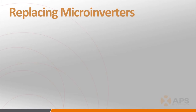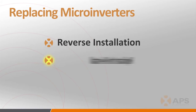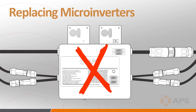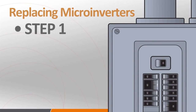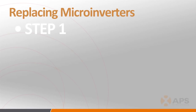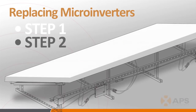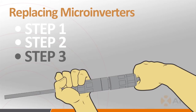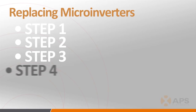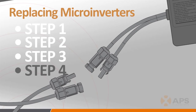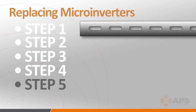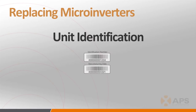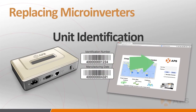Replacing the microinverters is as simple as reversing the installation process for removal and replicating it for reinstallation, with a few extra steps added for your safety. Step 1: de-energize the AC branch circuit by turning off the branch circuit breaker. With the branch circuit offline, cover the PV modules associated with the inverter to be removed with opaque covers, ensuring the panels are not producing DC power. Next, disconnect the AC connectors to the adjacent inverters. Step 4: disconnect the DC connectors from the PV modules associated with the inverter. And finally, physically remove the inverter from the rack. Follow the installation procedures covered earlier to install the replacement inverter, making sure to change the inverter UIDs in the ECU and EMA to reflect the changes you've made.